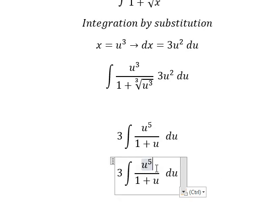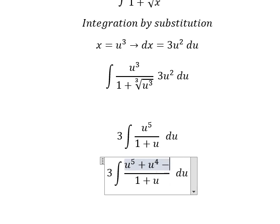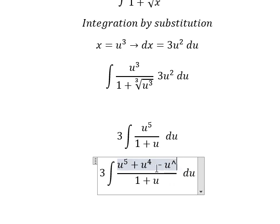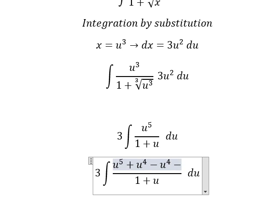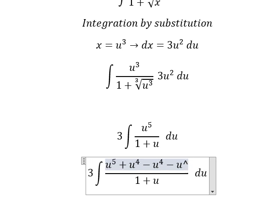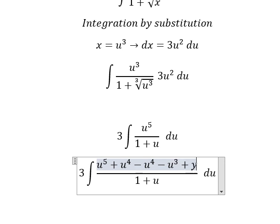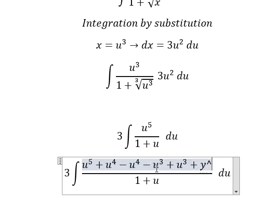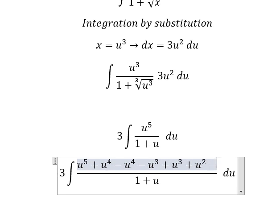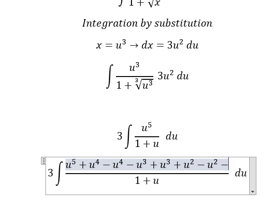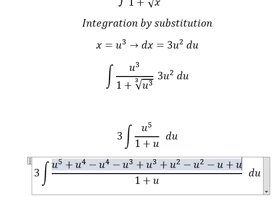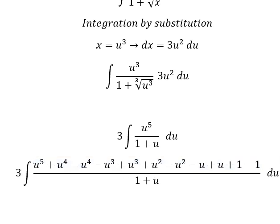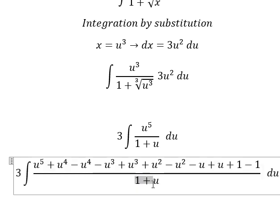For this one we need to add u to the power of four, then we minus u to the power of four, then we put negative u to the power of three, then we add back positive u to the power of three, and now we just repeat again — because I want to create the factor divided by one plus u.